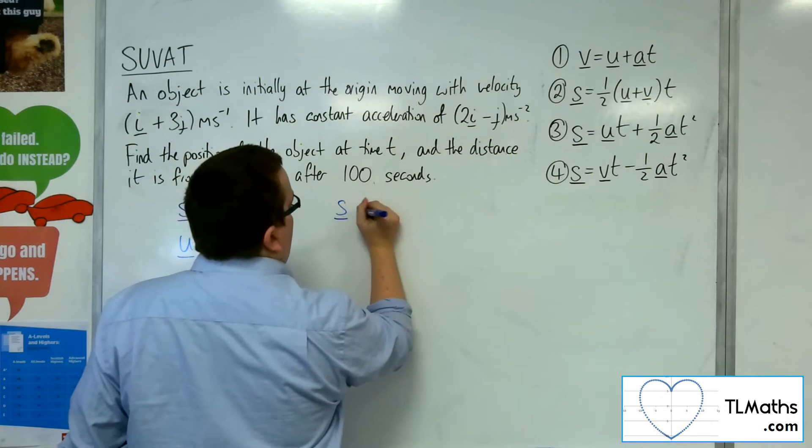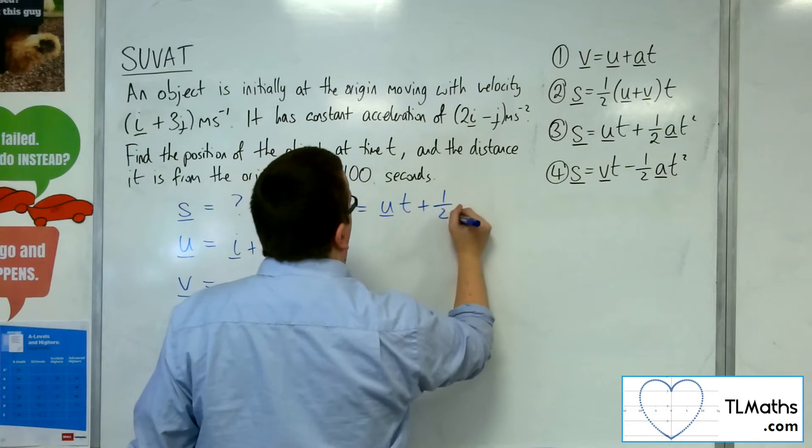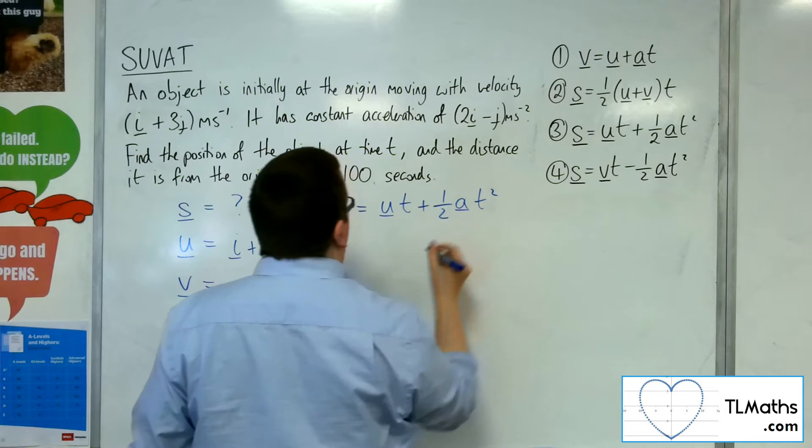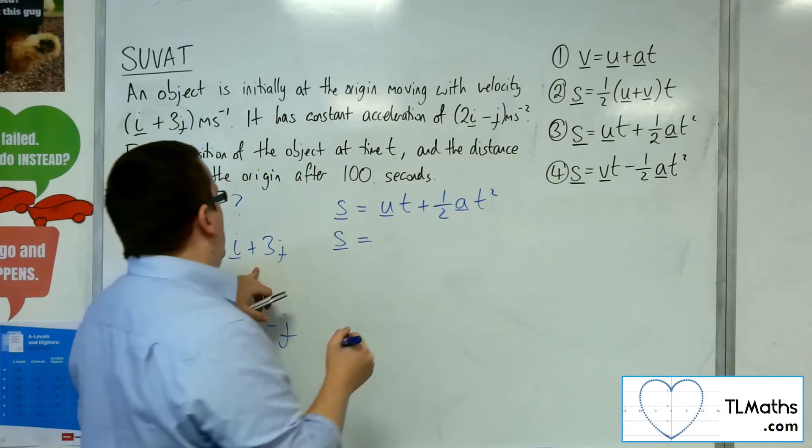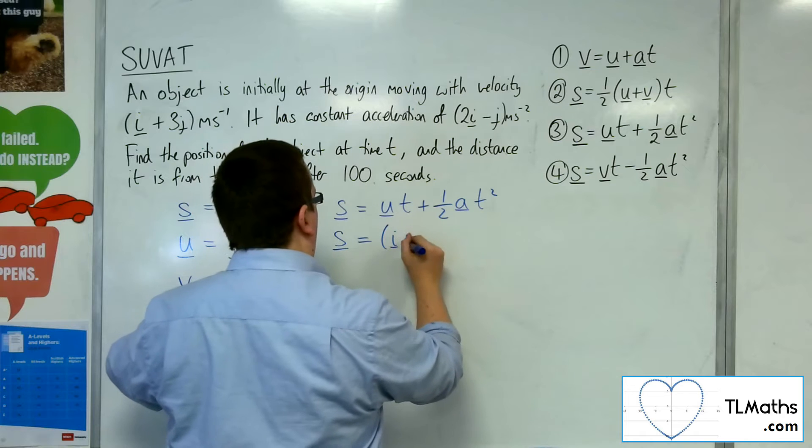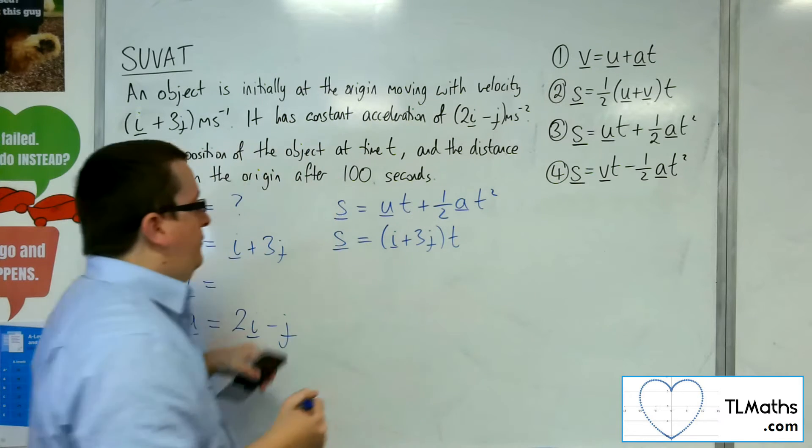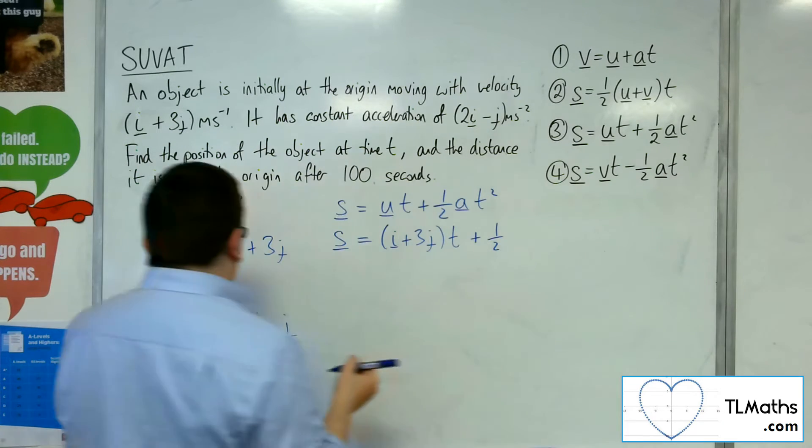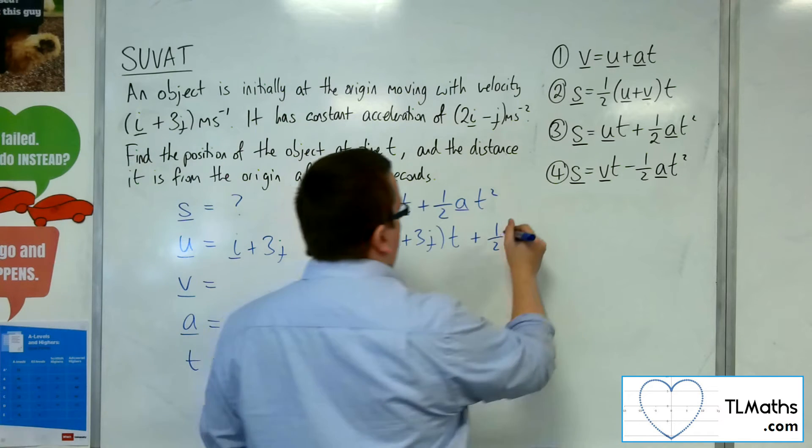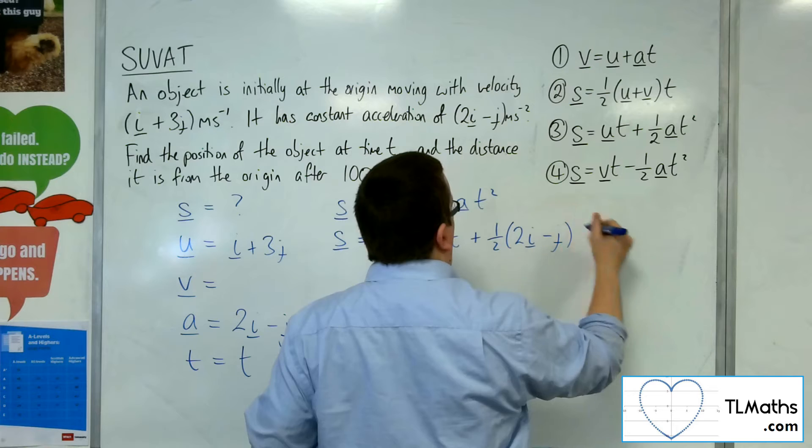So, s is equal to u times t plus 1 half at squared. So, u is i plus 3j, and that's times t. Plus 1 half of a, which is 2i minus j, times t squared.